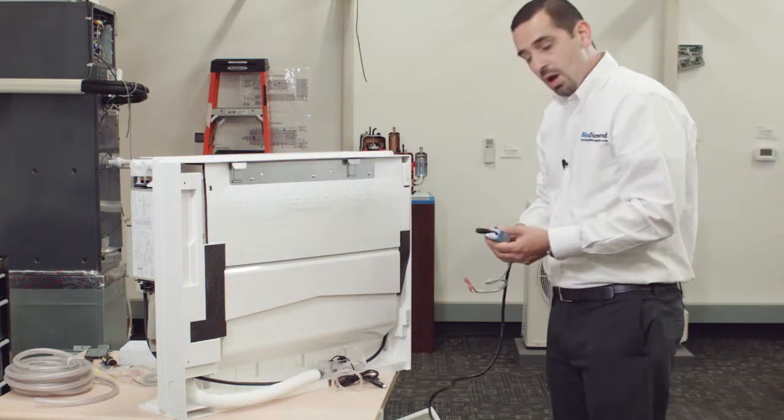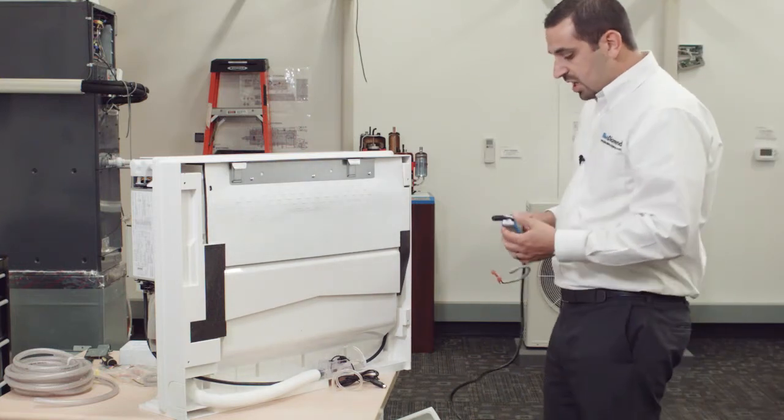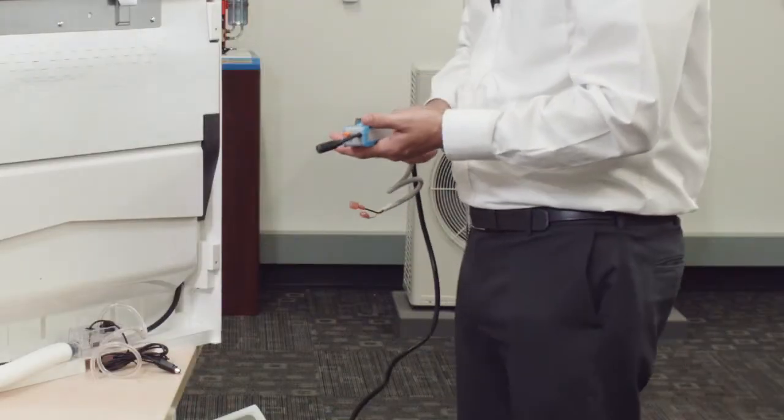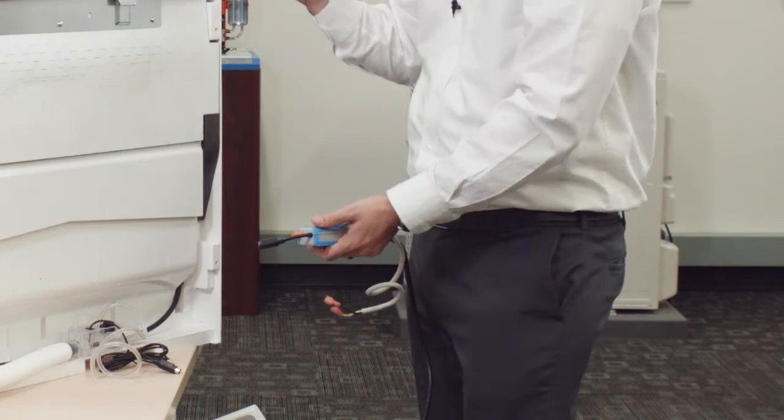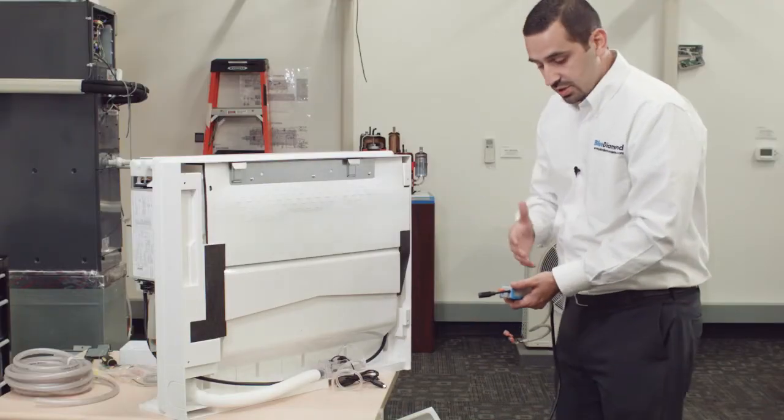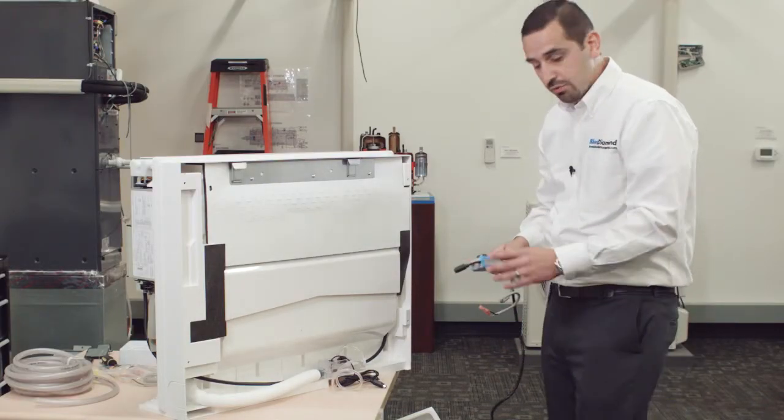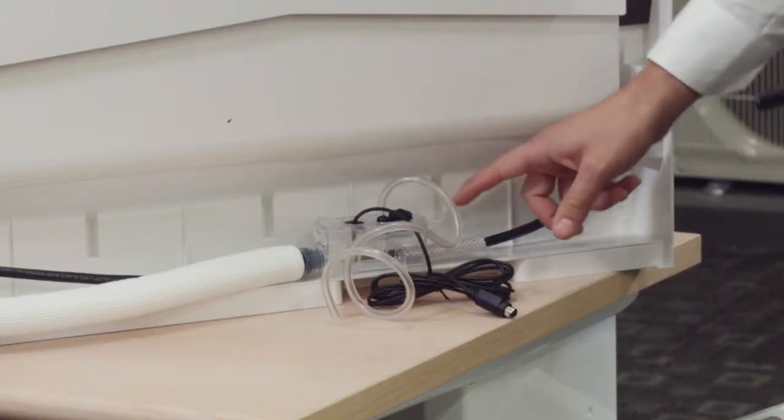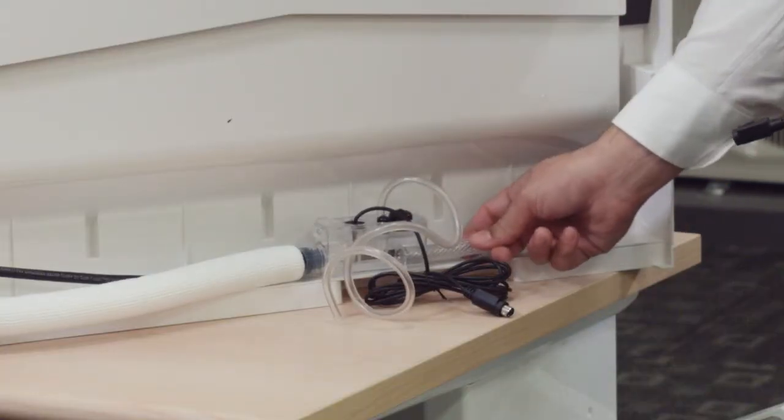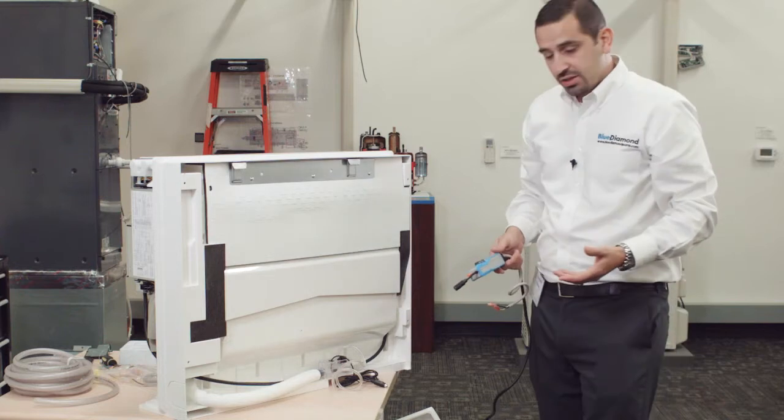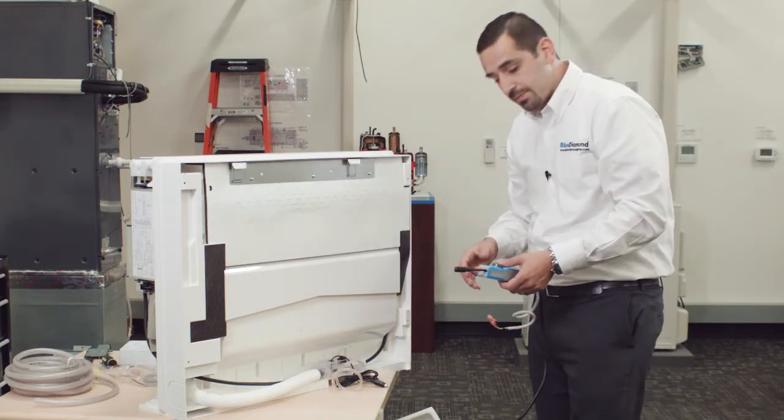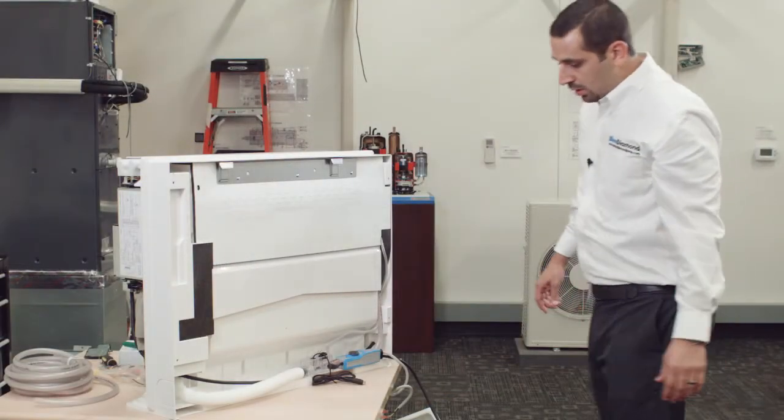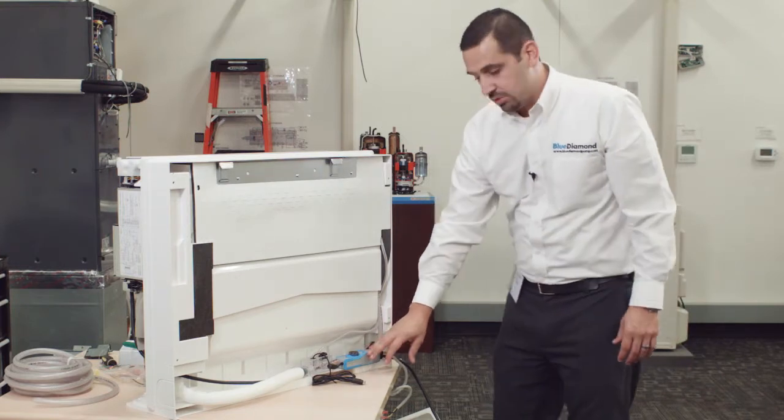Once you have the reservoir in place, then we want to put the pump back here as well. Keep in mind these pumps do create suction, so if for some reason you didn't want to mount it back here, you could mount it anywhere within six feet of the unit because it does create suction and it's a self-priming unit. We're going to adapt it to the reservoir with quarter inch ID tubing.